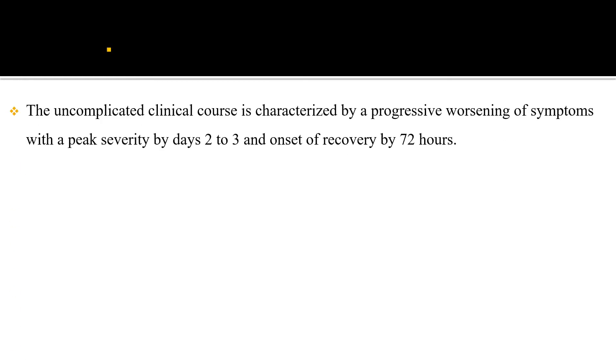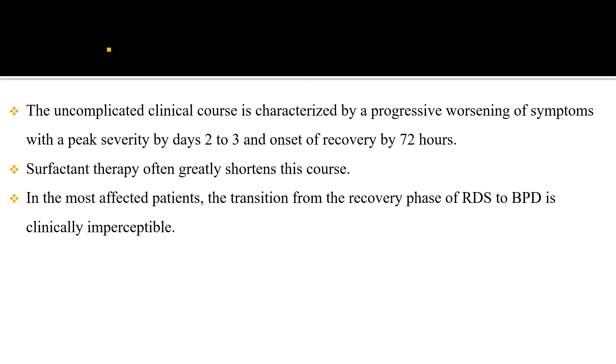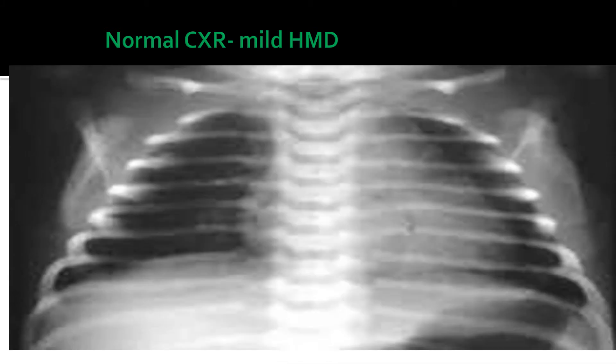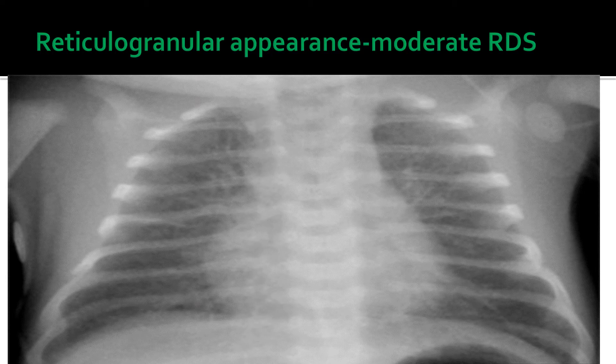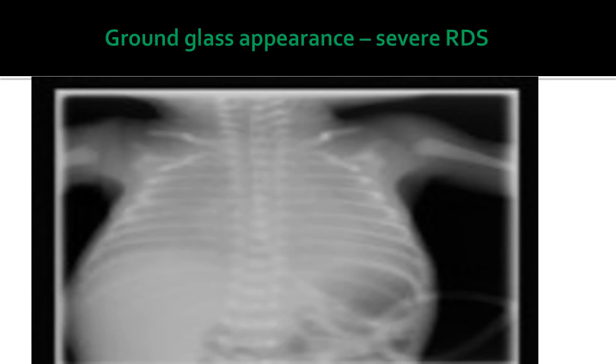The uncomplicated clinical course is characterized by progressive worsening of symptoms with peak severity by day 2 to 3 and onset of recovery by 72 hours. Surfactant therapy often greatly shortens the course. We can grade RDS severity by chest x-ray: mild RDS shows a normal chest x-ray; moderate RDS shows reticulogranular appearance; and severe RDS shows almost complete whiteout or ground glass appearance where it is difficult to differentiate the heart border from the lung.